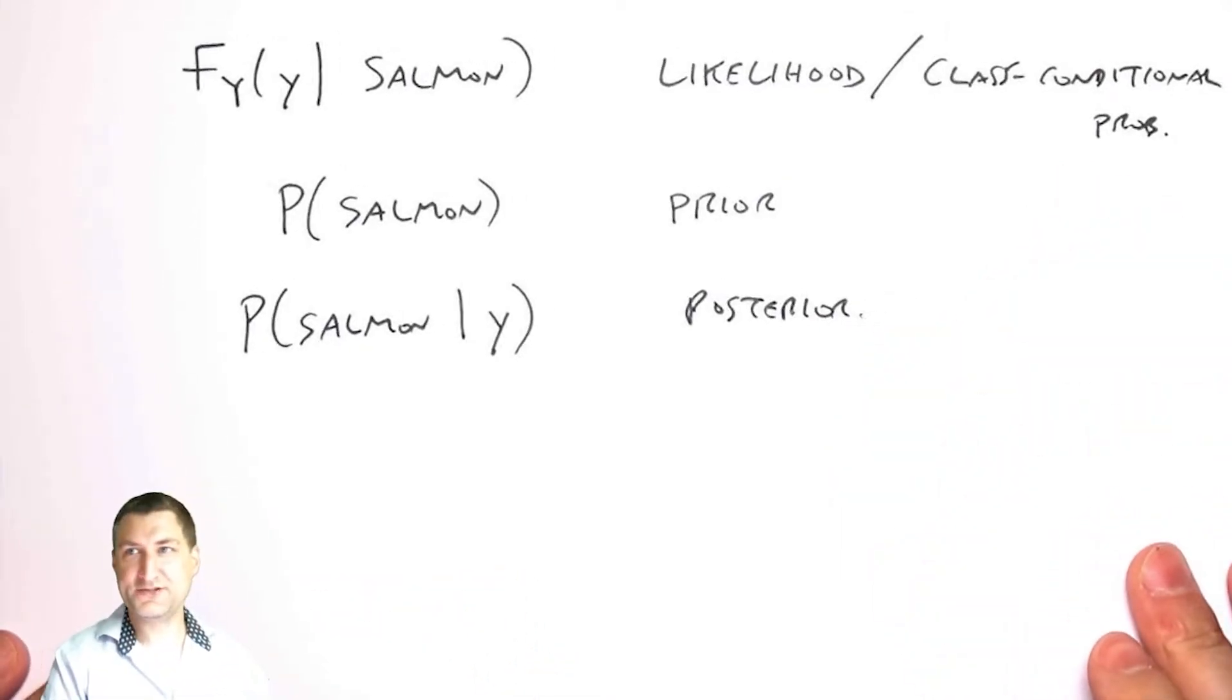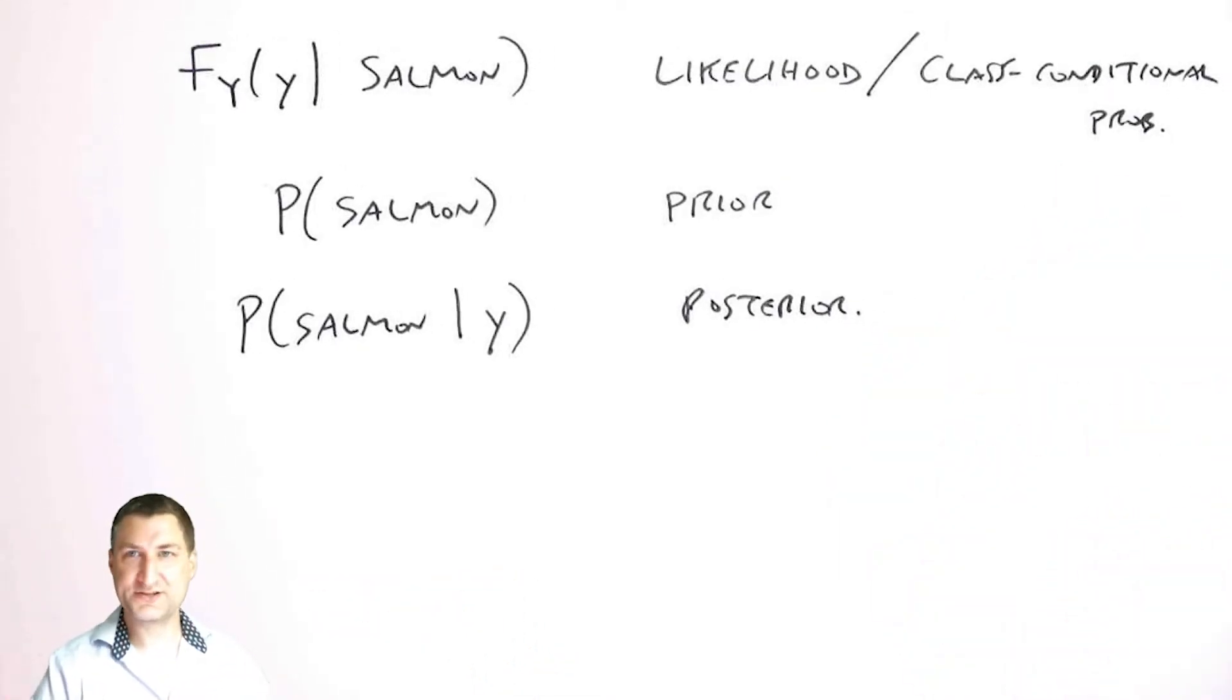This is something we talked about in the context of Bayes rule, saying that I had a prior probability just from knowing how many fish there are in the sea. Now I see this observation y. How does that update my probability to what's called the posterior probability?